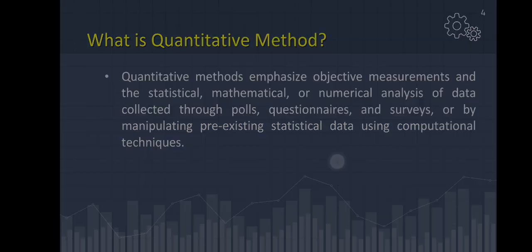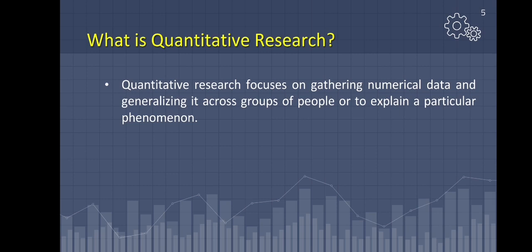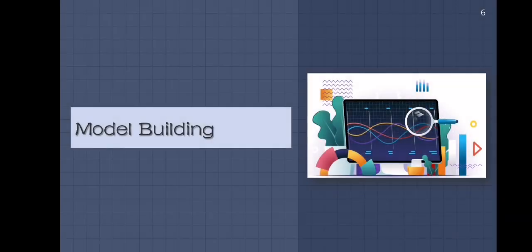Quantitative research focuses on gathering numerical data and generalizing it across groups of people or to explain a particular phenomenon. Quantitative method involves gathering data through polls, questionnaires, and surveys, converting it to numerical data, and applying statistical, mathematical, or numerical analysis. These data are important when it comes to choosing what model to use or model building.